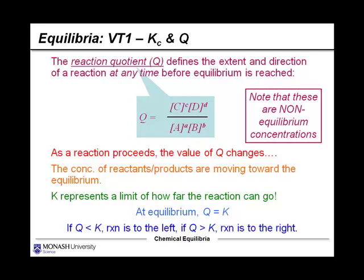If we crunch the numbers and we find that Q is less than K, well, then the reaction is obviously on the left. In other words, it's favouring the reactants over the products. If Q is larger than K, then the reaction is to the right of the equilibrium. That is, there are more products than you would expect if we were at equilibrium. This is the reaction quotient.